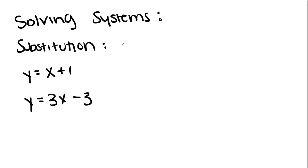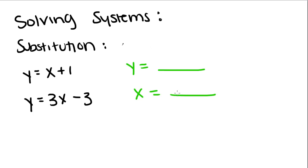Now we're going to talk about another way to solve systems of equations — by a method called substitution. When you substitute a variable, what you do is you want one of the equations to be written as either y equals or x equals, and then you substitute that equation into the other equation. In this case, they're both already solved for y.